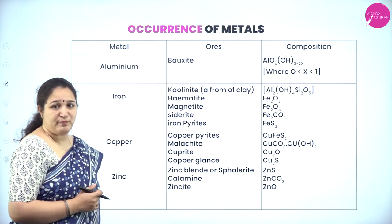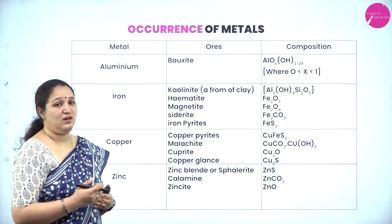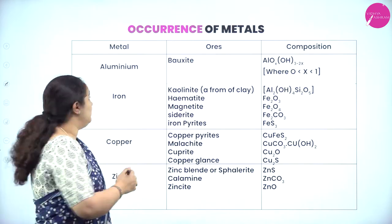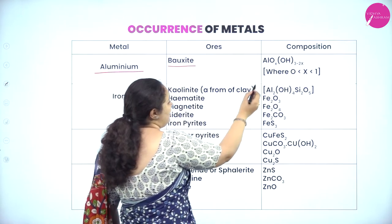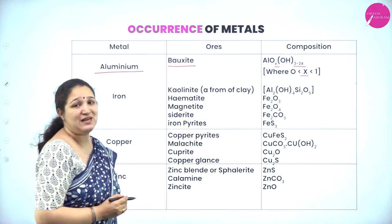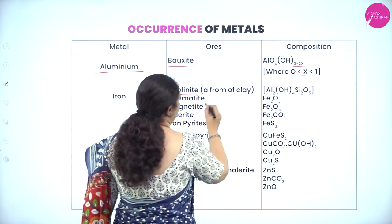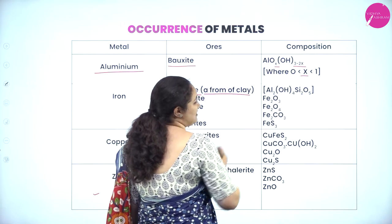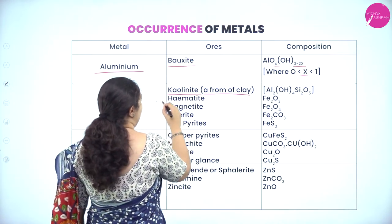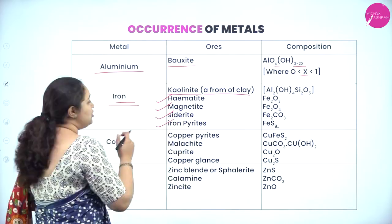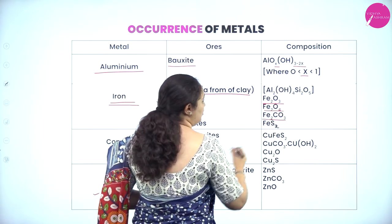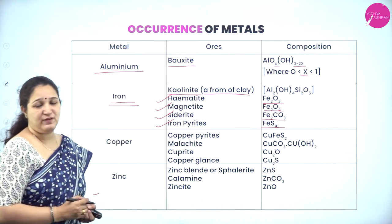Next is occurrence of metals. Different metal ores occur in combined state. The first one is aluminium — the ore is bauxite, with composition AlOx(OH)3-2x where x is greater than 0 but less than 1. One more ore is kaolinite, that is from clay: Al2(OH)4Si2O5. Next is iron, which has four different ores: hematite is Fe2O3, magnetite is Fe3O4, siderite is FeCO3, and iron pyrites is FeS2.